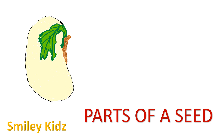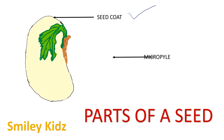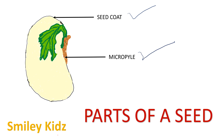First, let us see the parts of a seed. The outer covering of a seed is called the seed coat. The seed coat protects the seed and the baby plant inside it. There is a tiny opening in the seed coat called the micropyle. The seed absorbs water through this micropyle.